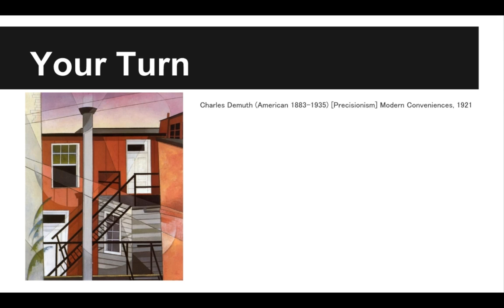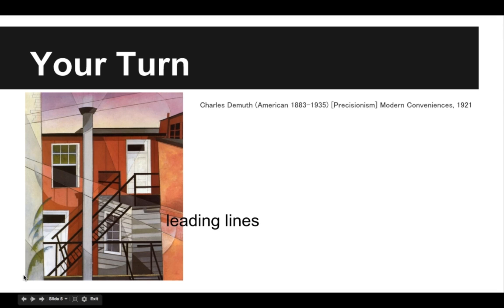Hopefully that wasn't too hard, and if it was, that's okay — this takes a little bit of practice. One thing we're seeing is leading lines, also the use of line. When it's used in this way, it's called leading lines. These lines jutting all across the composition are really helping to lead our eye to move throughout the composition. It's creating almost a Z, which is a really great composition format.